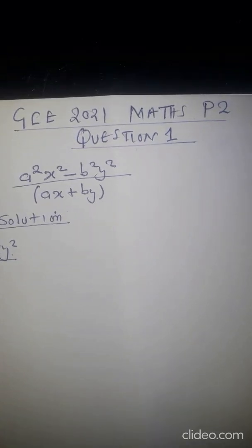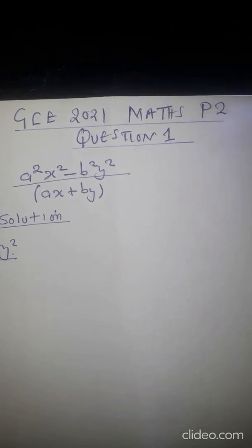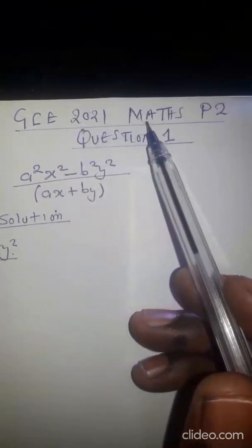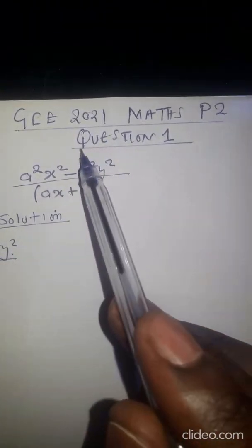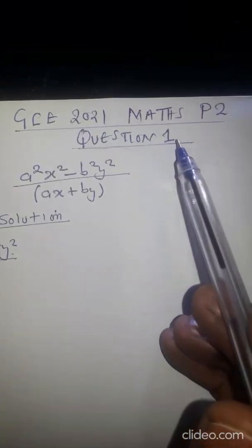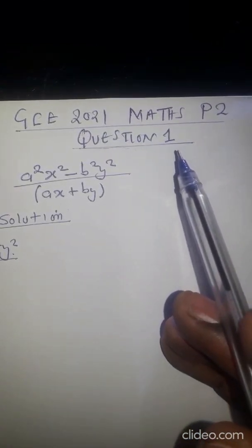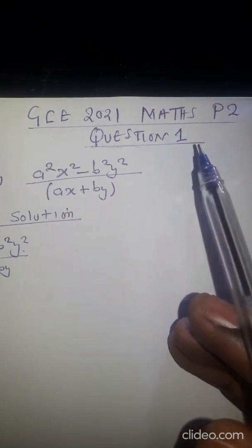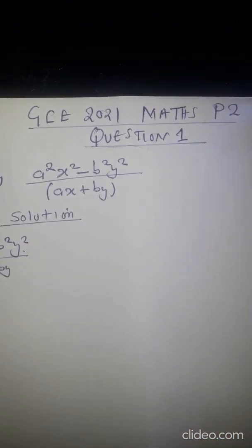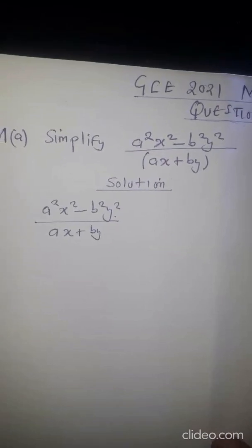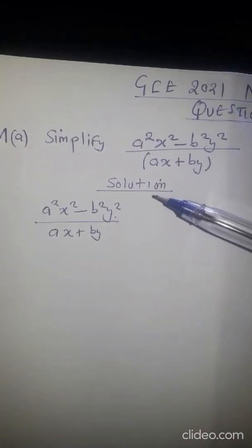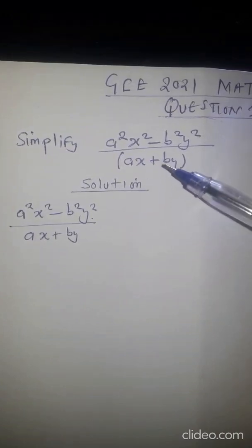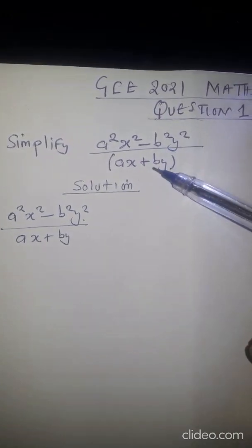Hello, welcome to Math Guide Mvola DK Tutorials. In this video we want to look at how we can work out the solutions for the GCE 2021 Mathematics Paper 2. Particularly we want to look at all of Question 1, which has got three parts: Part A, Part B, and Part C. So let's consider Question A, which says: simplify the given expression, which is in the form of a fraction.